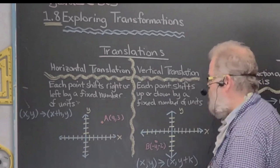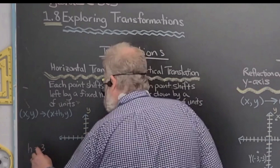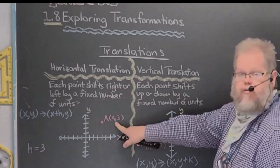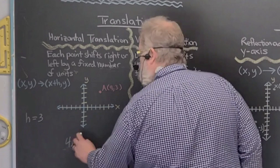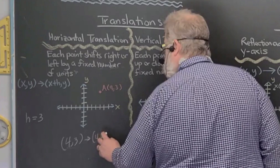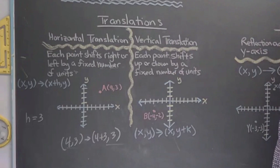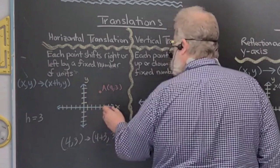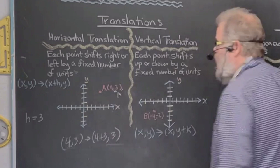Let me set H equal to three. The ordered pair four comma three becomes four plus three comma three, which is seven comma three. So the point moves to seven comma three, and we call that A prime, which is the translated point.